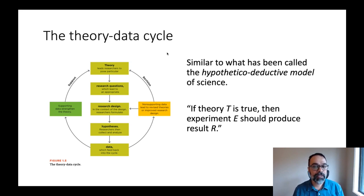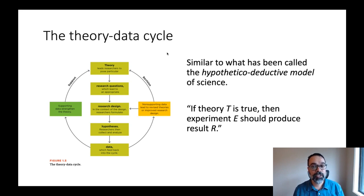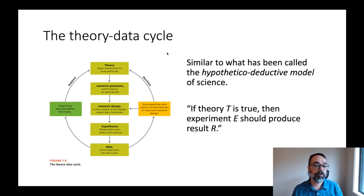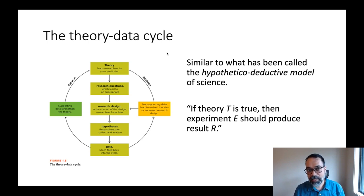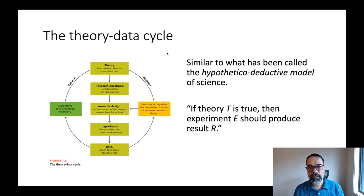As a scientist, you look at a theory and come up with a specific question. Based on those questions, you design a study to help answer them. You then formulate hypotheses — specific predictions about what you should observe if your theory is correct or incorrect. Then you go out and collect data. The data might support your theory, in which case you say the theory has been corroborated, or it might lead you to revise the design or revise the theory. The general form is: if this theory is true, then an experiment should produce a particular result.